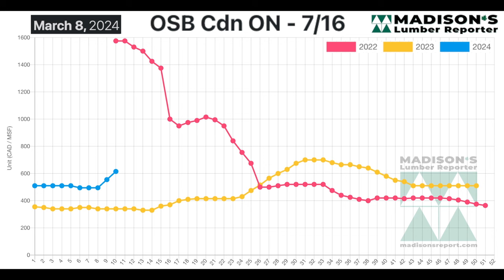Here we have OSB, again, the benchmark 7 sixteenths out of Ontario, similar. A little bit different here where the yellow line for last year, 2023, is quite a bit below this year, whereas for the plywood, they matched quite closely.